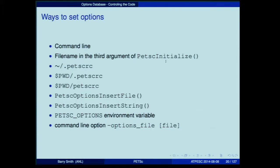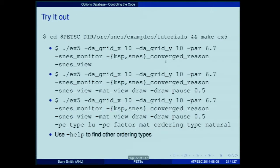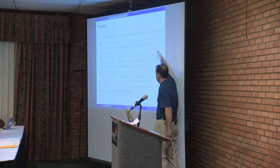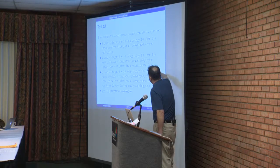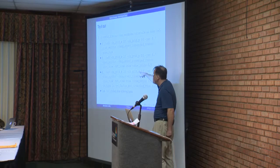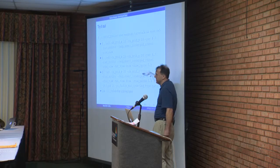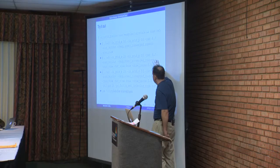There's a variety of ways to put entries into the options database. Here's an example of using it: running an example with options like SNES monitor, which says to monitor the nonlinear solver operation. Or KSP SNES converged reason, which prints why it converged or not. The mat view drawer option means you'll view the matrix using a drawer viewer — a graphical representation of the sparse matrix.